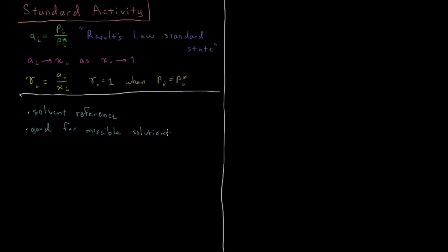Many solutions are non-ideal, and there are certain mole fractions where the two liquids will not mix with each other into one phase, and they'll separate and form multiple different phases. For example, if you take water and then some large organic molecule like hexane and you try to mix those two, there are many mole fractions where the two of them will not mix and the solution will not be miscible. So Raoult's Law standard state is a poor standard state for a solution in which they're not miscible at all concentrations.